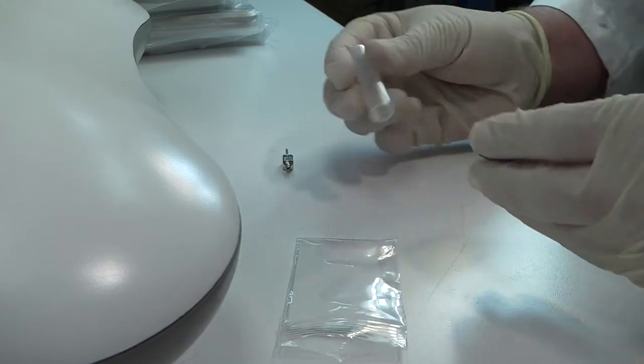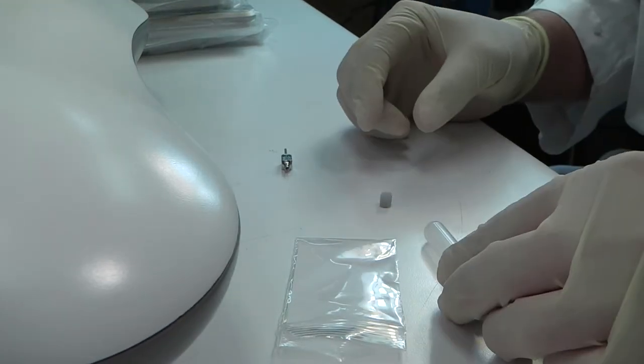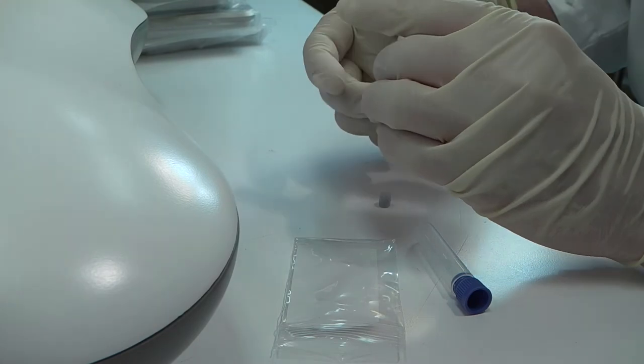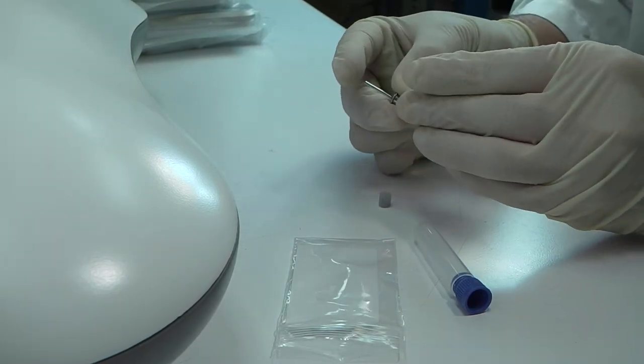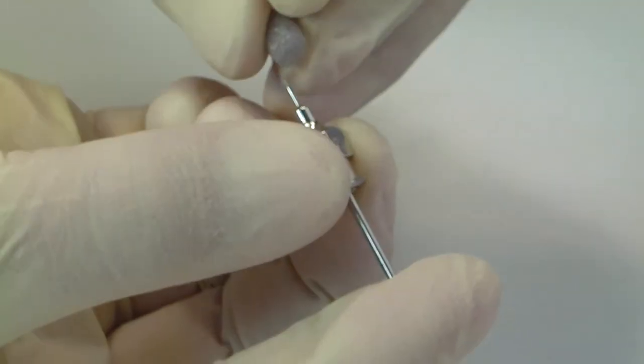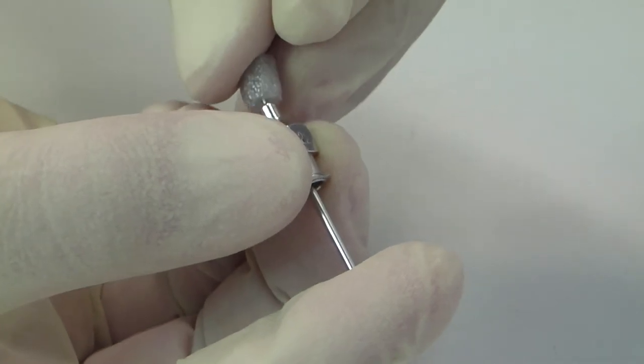To repackage and store a probe assembly, carefully put the protective foam piece back onto the tip of the probe assembly to prevent blunting the tip of the test probe. Be sure to support the back of the test probe without bending it so that the tip of the test probe pierces the foam piece.